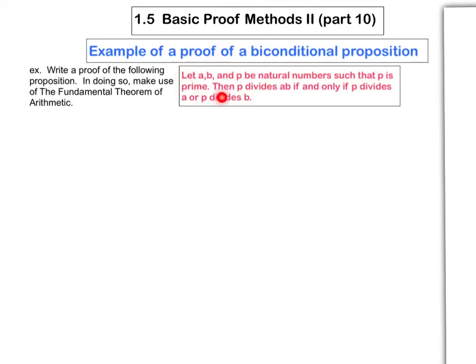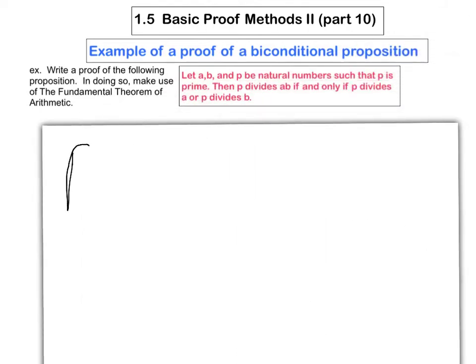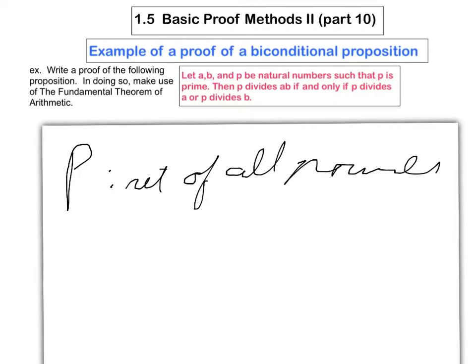Before you do that, I'd like you to write out the original statement using symbols. All of this information in the first sentence should be statements about quantifiers and universal sets. We really want the hypotheses and conclusions to be just the main parts. We don't want the part about p being prime to be part of the hypothesis.